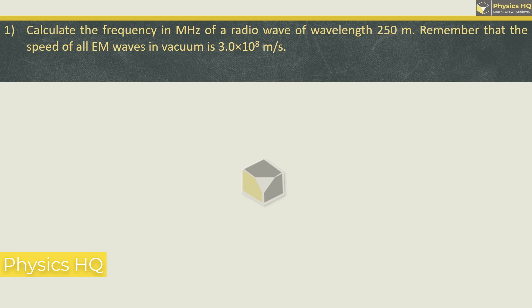Calculate the frequency in megahertz of a radio wave of wavelength 250 meter. Remember that the speed of all EM waves in vacuum is 3 into 10 raise to 8 meter per second.